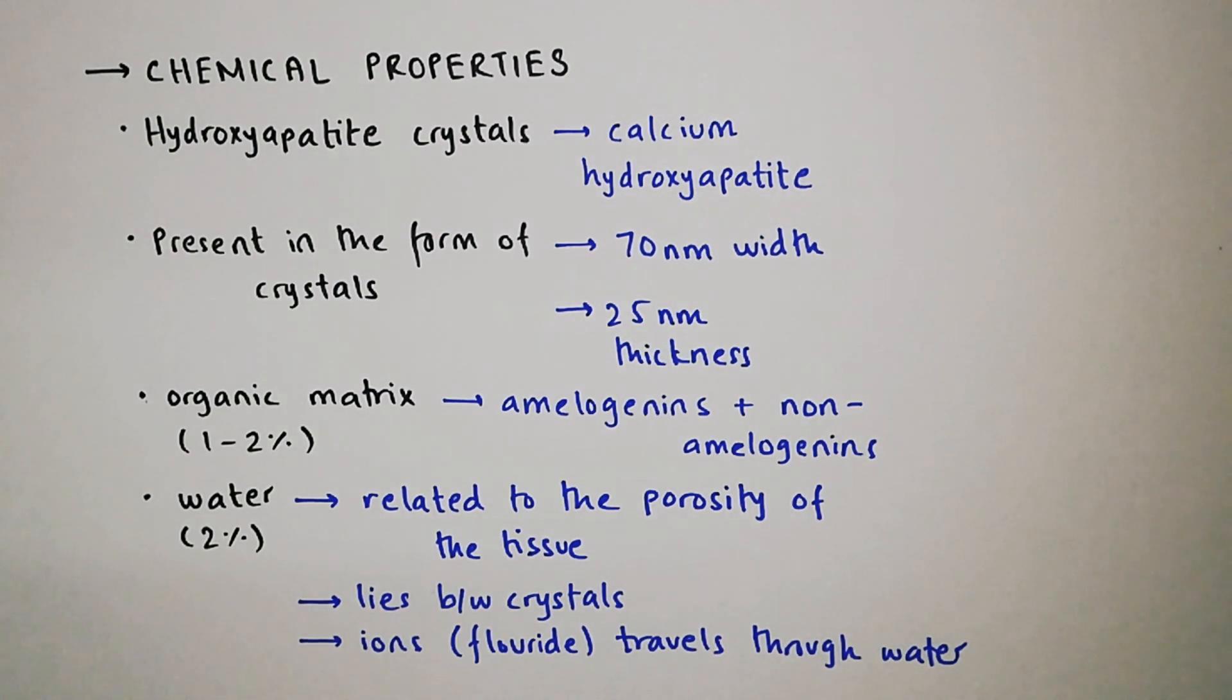Now we come to the chemical properties of enamel. Enamel consists of hydroxyapatite crystals, the major mineral component of which is calcium hydroxyapatite. It is present in the form of crystals which are 70 nanometers in width and 25 nanometers in thickness.